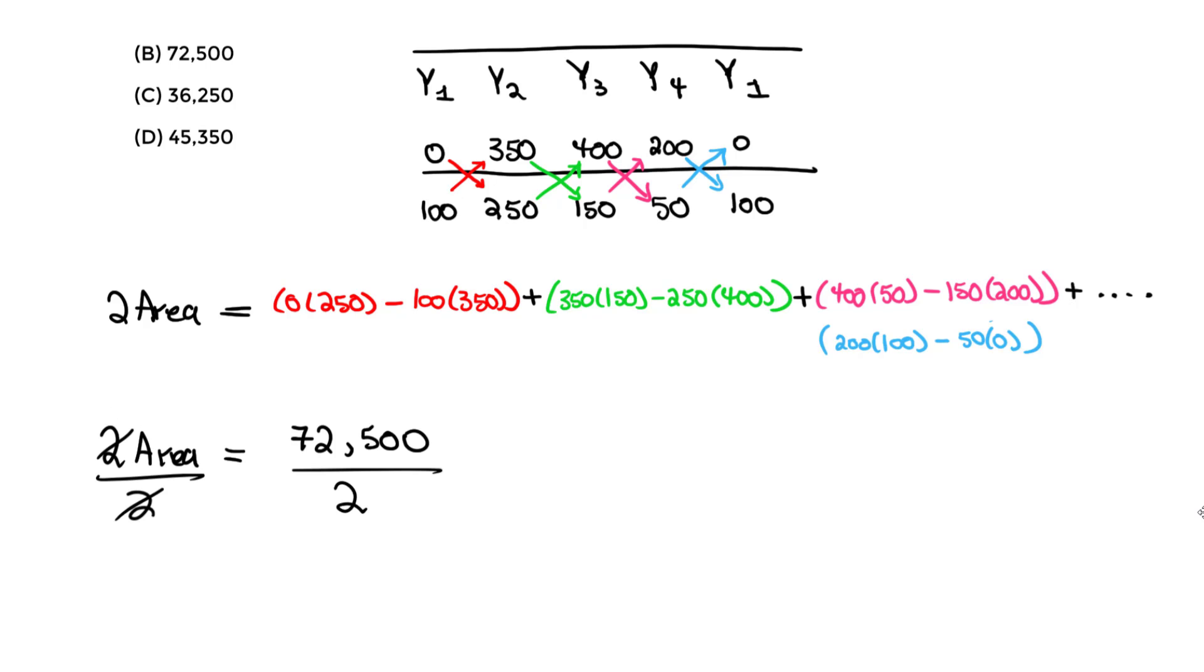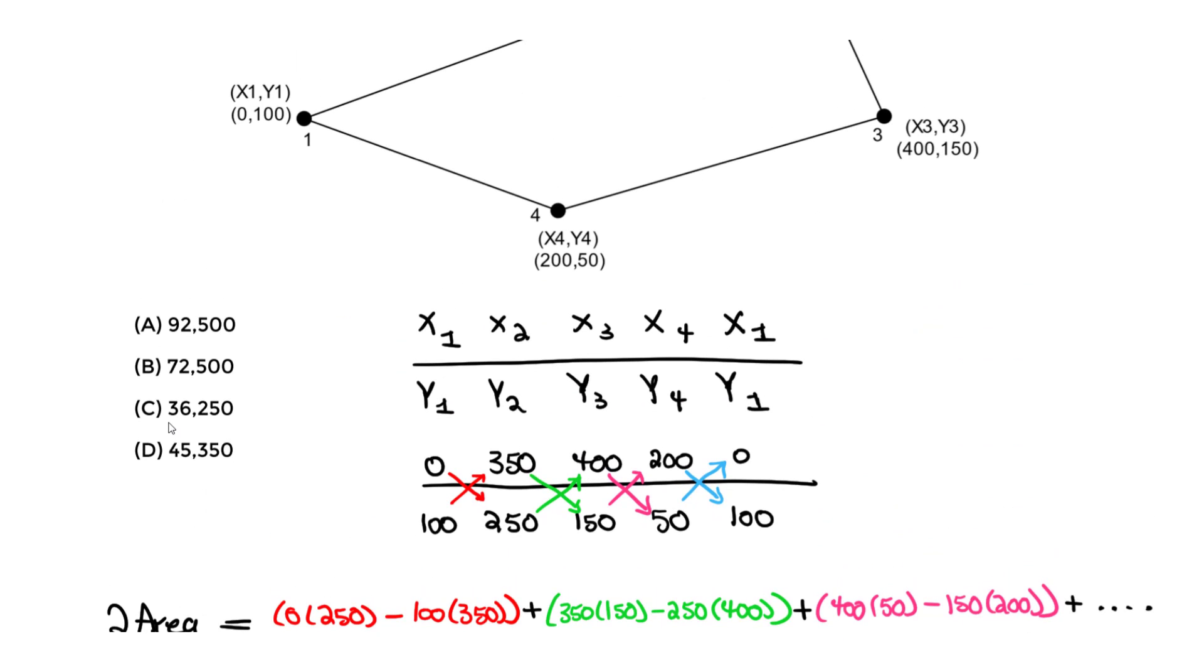What you do to this side you must do to this, so the area in this case is that value here divided by 2. We take the 72,500, divide that by 2, and we get about 36,250. The units might be feet squared or meters squared, for example. So this will be the area using the coordinate method. That's our answer, and in this case it should be C. That's it, thank you.